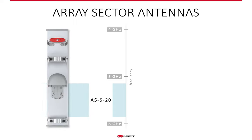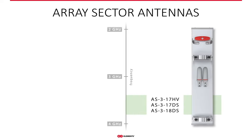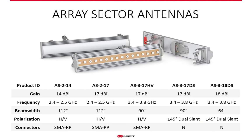We offer a 5 GHz array sector antenna already, and now we are extending the offer to array sectors for the 3 GHz and 2 GHz frequency bands, since noise is an issue also there. In the 2 GHz band we are adding two antennas, the AS214 and AS217, with 14 and 17 dBi gain, covering 100 MHz of spectrum starting at 2.4 GHz.